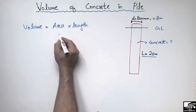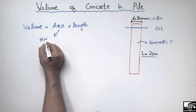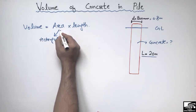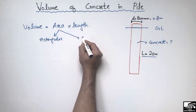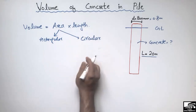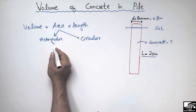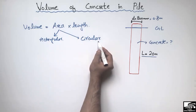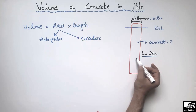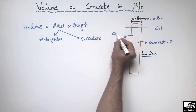The pile is either rectangular or circular, but mostly circular piles are used in construction. Rectangular piles are really rare, so mostly circular piles are used. In this case we also take it as a circular pile.